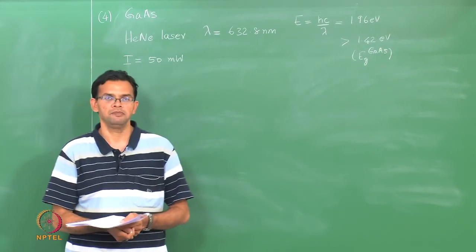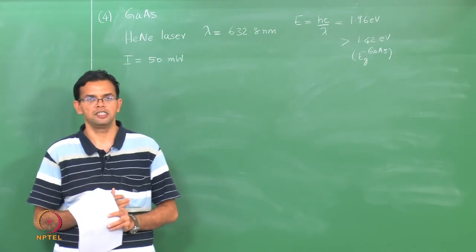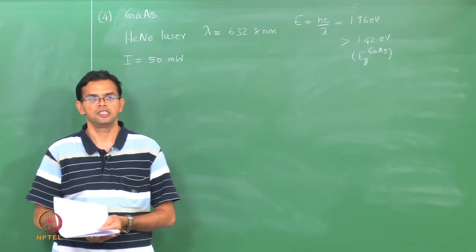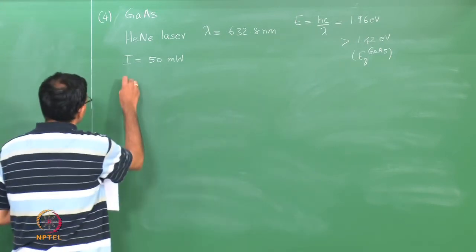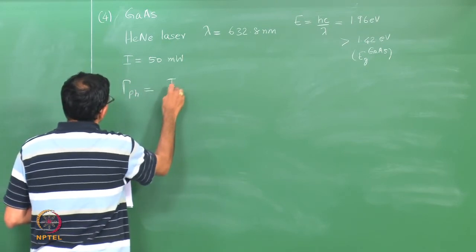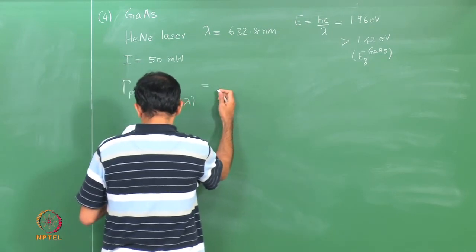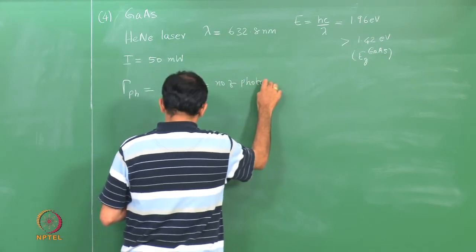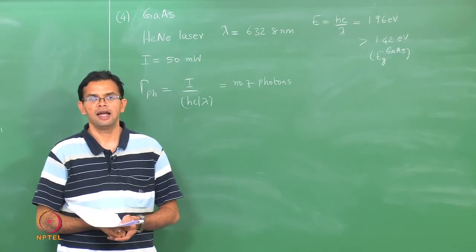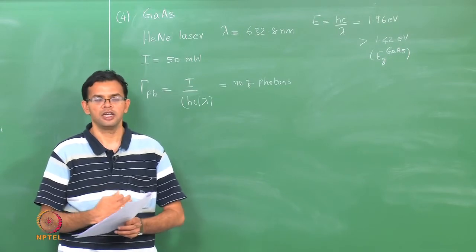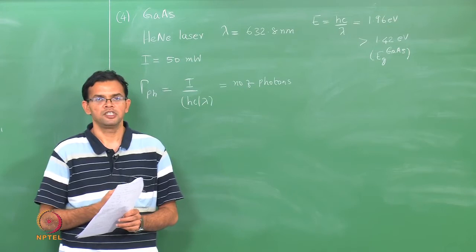What happens is that the excess energy of the photons gets translated into excess energy of the electrons and holes. This excess energy is then lost as heat to the surrounding material — this is essentially the thermalization process. To calculate the power lost to thermalization, we first calculate the number of photons: Φ_ph = I / (hc/λ).